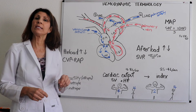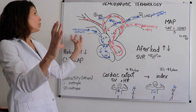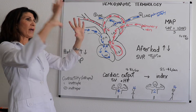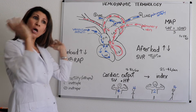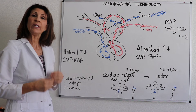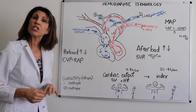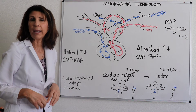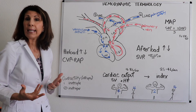A diuretic is one form of preload reducer. Another would be a venous vasodilator, something like nitroglycerin, which targets mainly the venous system. It dilates the vessel going into the right atrium, so if that pipe is bigger going into the right atrium, that lowers the amount of volume headed into it. So venous vasodilators are also preload reducers.